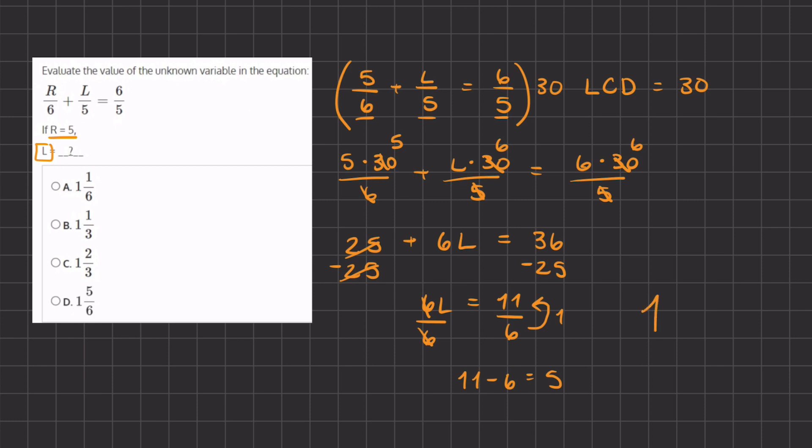So our whole number is going to be this 1, and our remainder is going to be this 5 divided by our original denominator, 6. So the value of our l is going to be 1 and 5 sixths, and that corresponds with answer d in our problem.